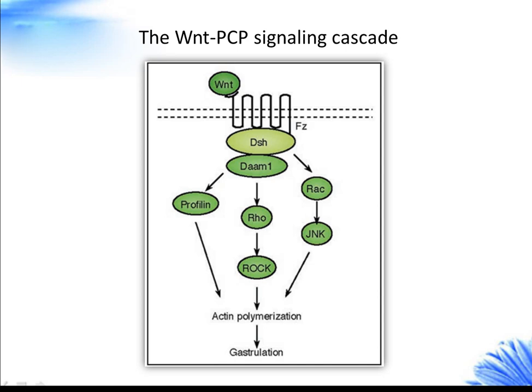The WNT-PCP signaling cascade involves Rho and Jun kinase (JNK) and controls cytoskeletal rearrangements. Its main role is the temporal and spatial control of embryonic development. On a cellular level, this pathway regulates cell polarity through effects on cytoskeletal organization. Cells in epithelia possess apical-basolateral polarity and are also polarized along the plane of the epithelial layer. WNT signaling is transduced through Frizzled independent of LRP5/6, leading to activation of DSH. DSH through DAAM1 mediates activation of Rho, which activates Rho kinase (ROCK), and also mediates actin polymerization through profilin. DSH also mediates activation of RAC, which activates JNK. Signals from ROCK, JNK, and profilin are integrated for cytoskeletal changes for cell polarization and motility during gastrulation.